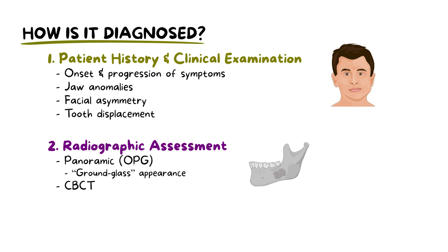To differentiate fibrous dysplasia from other conditions, a biopsy is essential. Microscopic analysis of the tissue sample typically reveals woven bone trabeculae within fibrous tissue, a hallmark of this condition.